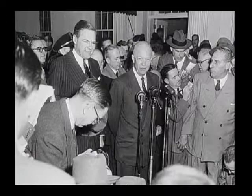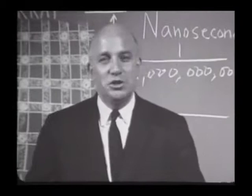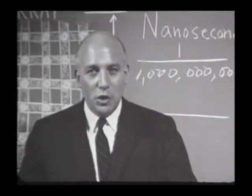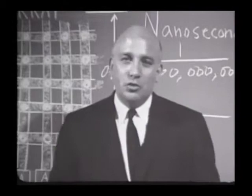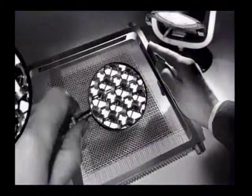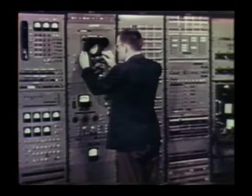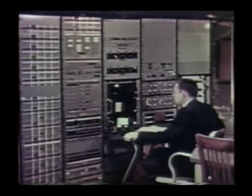J. Presper Eckert foresaw that computers would become smaller, faster, and cheaper, freeing humans from boring repetitive tasks and leaving them to use their creative ability. Back in 1949, Jay Forrester conceived of magnetic or iron core memory. A magnet can have northern or southern polarity — one would represent a one, the other a zero. After four years of development, Forrester installed the new memory in an MIT-designed computer called Whirlwind, and its operating speed doubled.